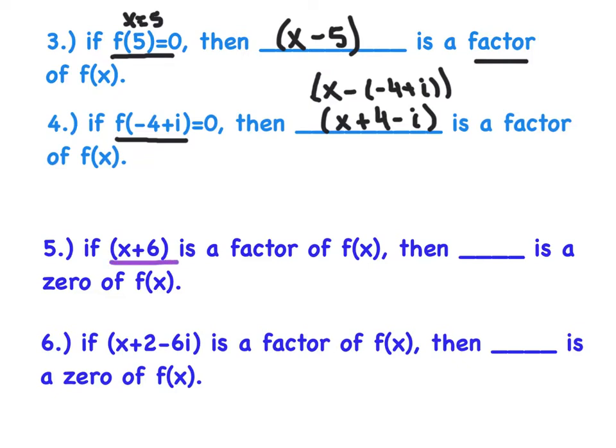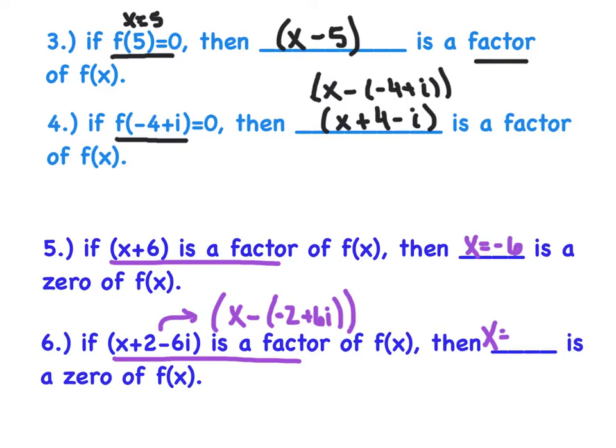Now we'll look at just the opposite. If we knew the quantity x plus six was a factor, then you know that x equals negative six is a zero. And then here's the real goofy one. I think this is maybe the most challenging thing tonight. So if you knew that x plus two minus six i was a factor, really what I want to do is I want you to see that as x minus something, and what that is is negative two plus six i. Now do you agree with me that if I distribute this negative sign, negative times a negative would give me that positive right there, and negative times positive would give me this negative. So try to rewrite the given factor with the double set of parentheses.